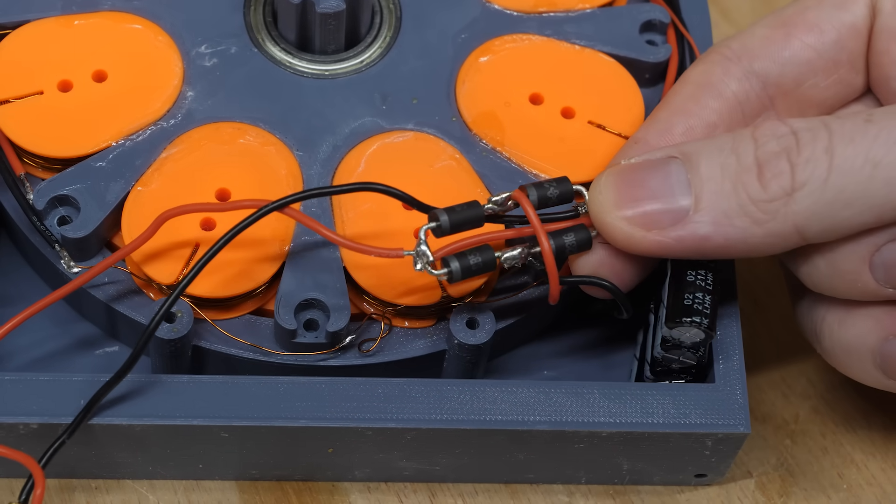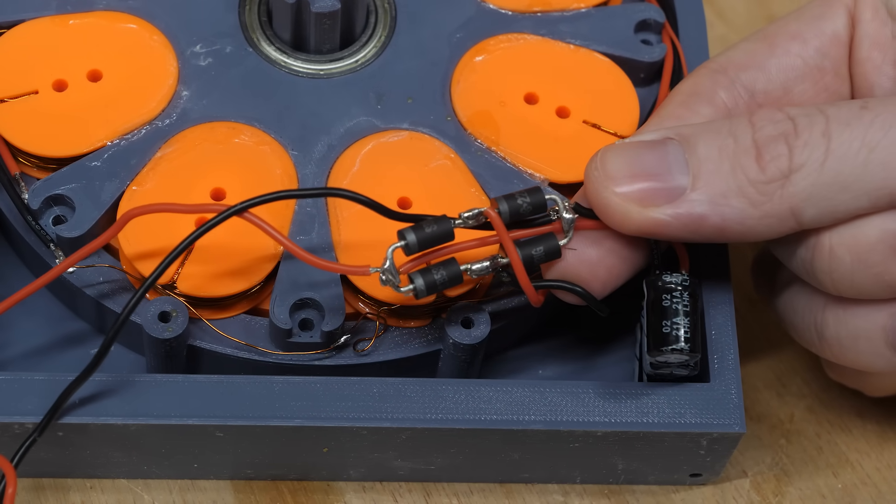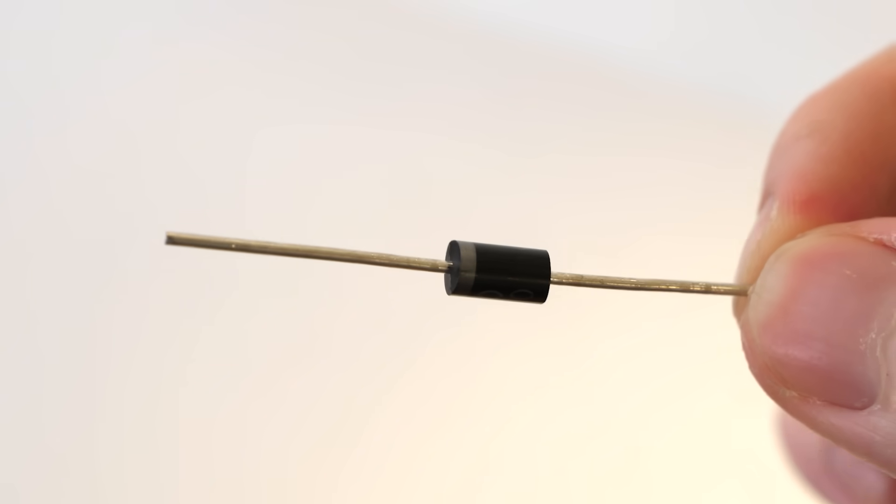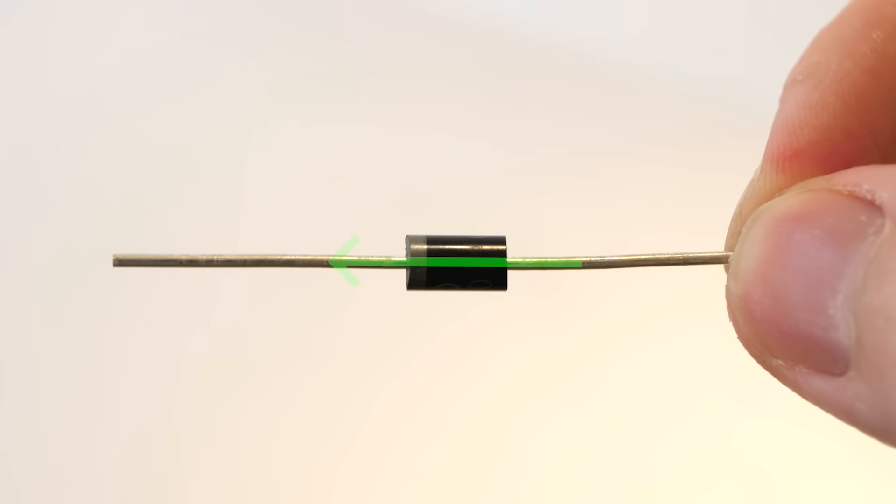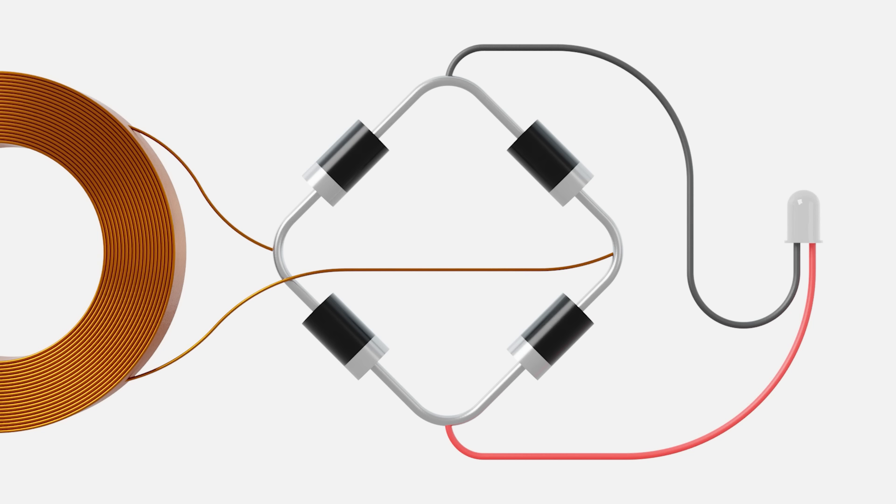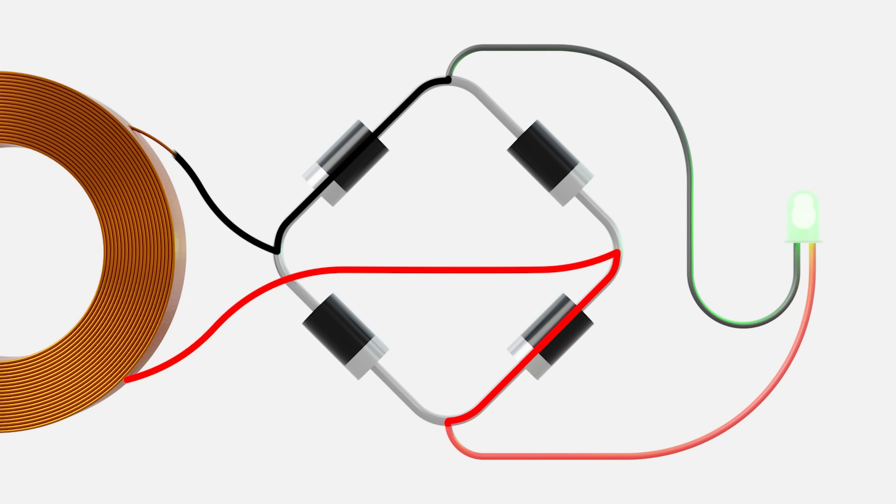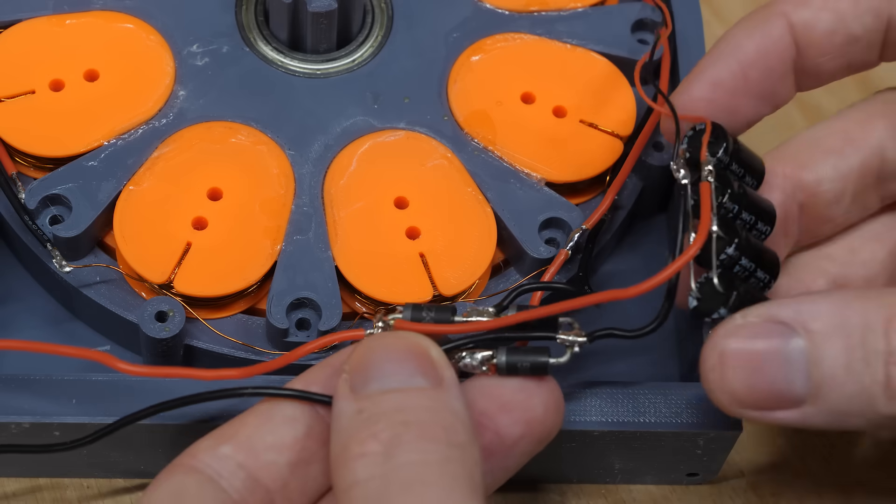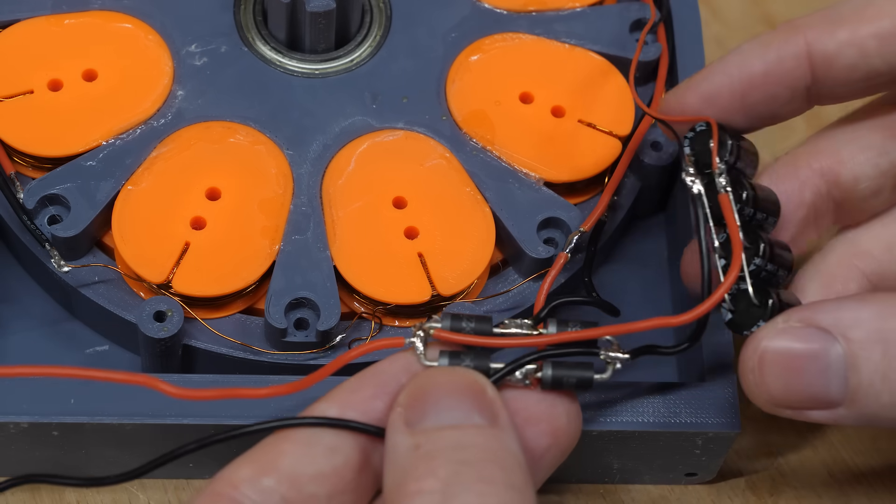The coils are then soldered to a full bridge rectifier, which is just four diodes that convert the alternating current or AC into direct current or DC. This works because the diodes only let electricity flow through in one direction. So if the coil produces current in the clockwise direction, it'll flow from the coil down through this diode over towards the LED, then after the LED it'll flow towards the top of the rectifier and down through this diode which connects it back to the coil completing the circuit. But if the coil creates current in the anti-clockwise direction, it'll flow through this wire to the rectifier, down through this diode, over to the LED, back towards the top of the rectifier, and down through the diode to complete the circuit. So no matter the current direction in the coil, the current direction at the LED or the output is always the same. And I also added a few small capacitors to try create a smoother output voltage.